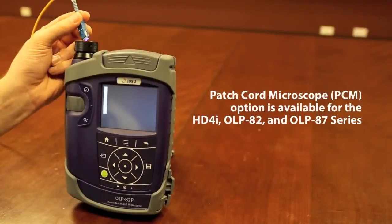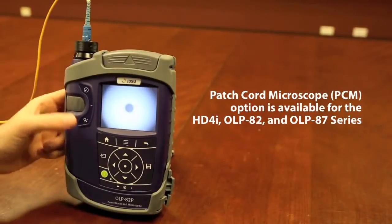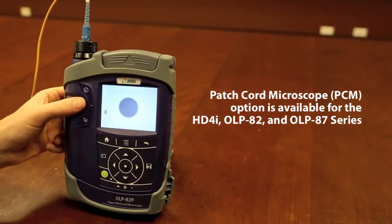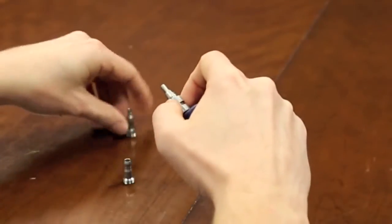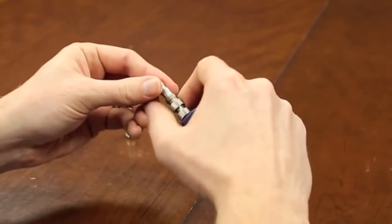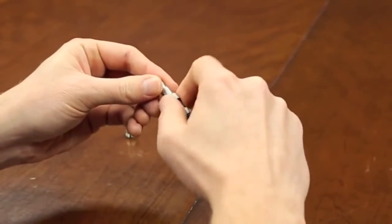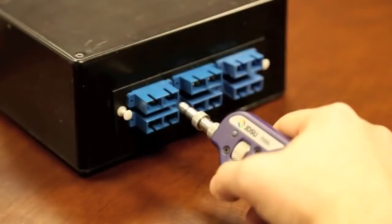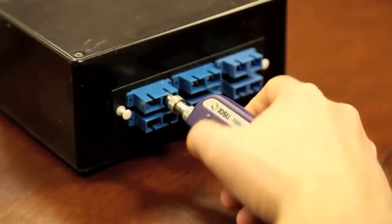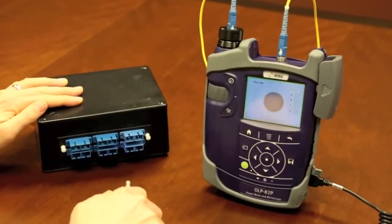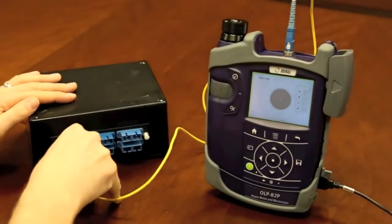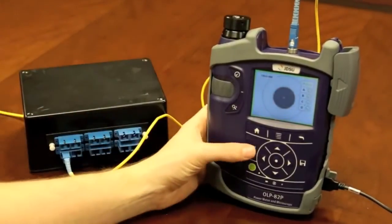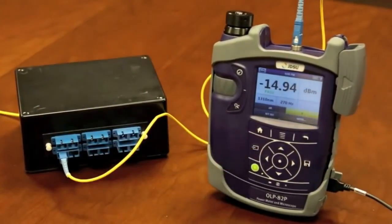Another great feature with SmartClass Fiber is the dedicated patch cord microscope option integrated directly on the device. Inspecting both ends of a fiber connection is critical, but using the probe requires two different tips, one for the patch cord and another for the bulkhead. By having a dedicated microscope for inspecting the male end, the probe can be used specifically for inspecting the connector behind the bulkhead, which saves significant time and drives workflow efficiencies.